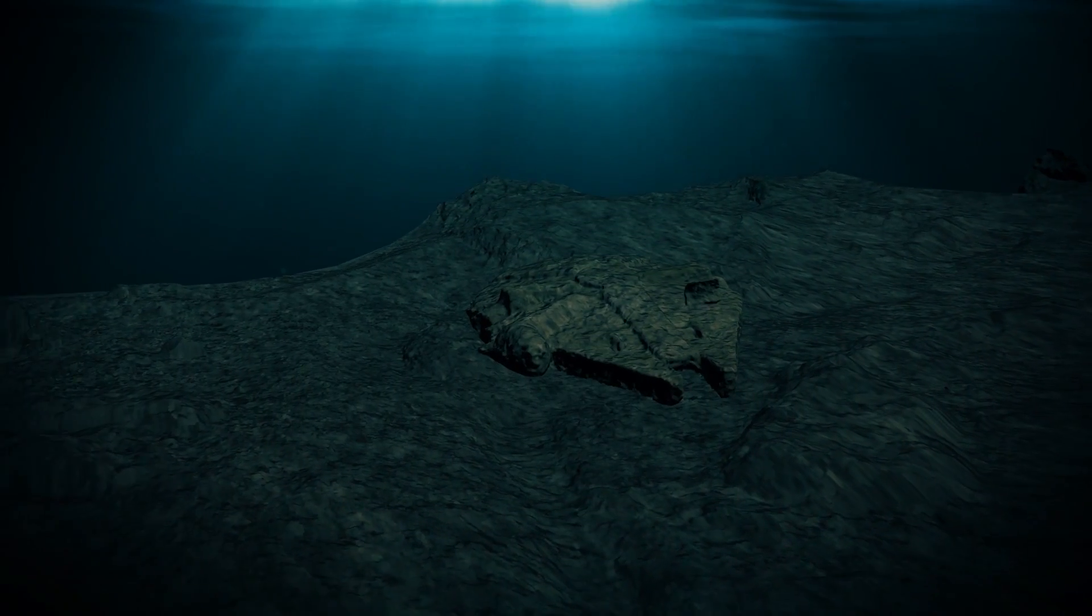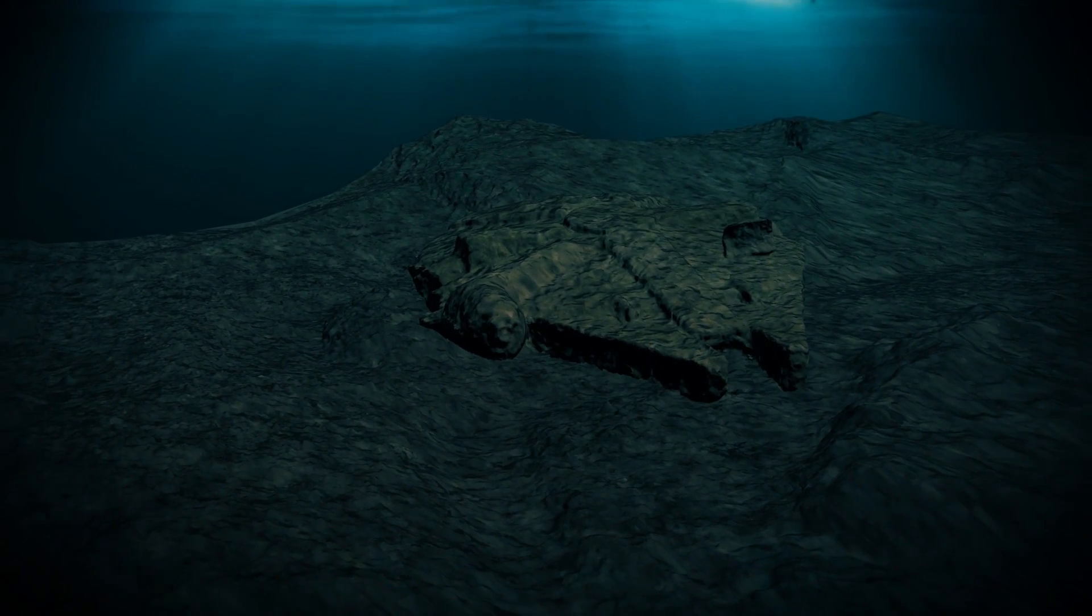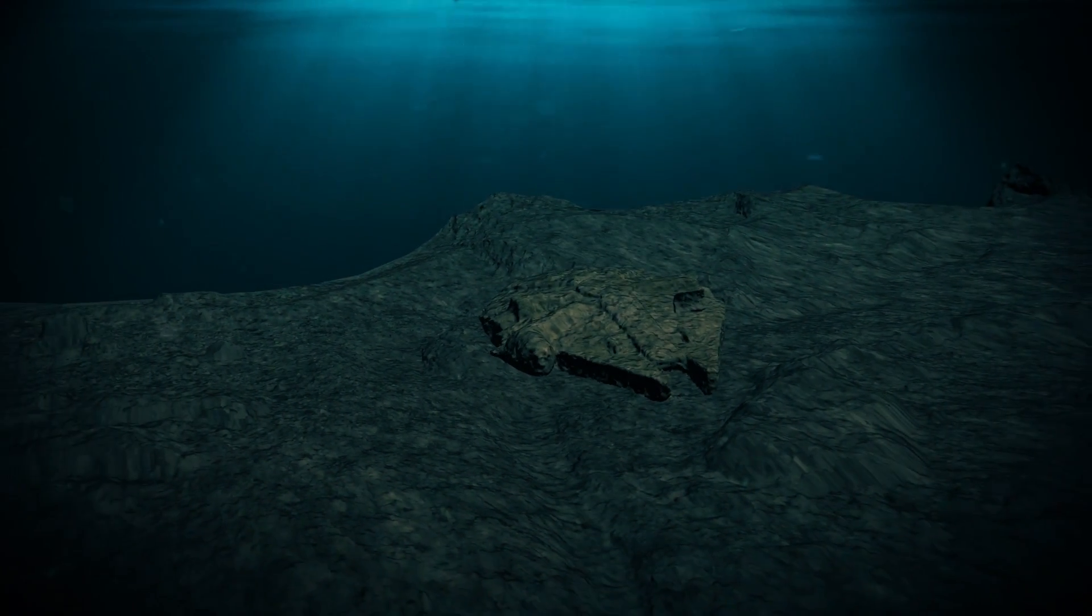Baltic Sea Anomaly. A round object with certain structural properties lies in the northern Baltic Sea. It was discovered in 2011 by Ocean X, a Swedish treasure hunting crew.